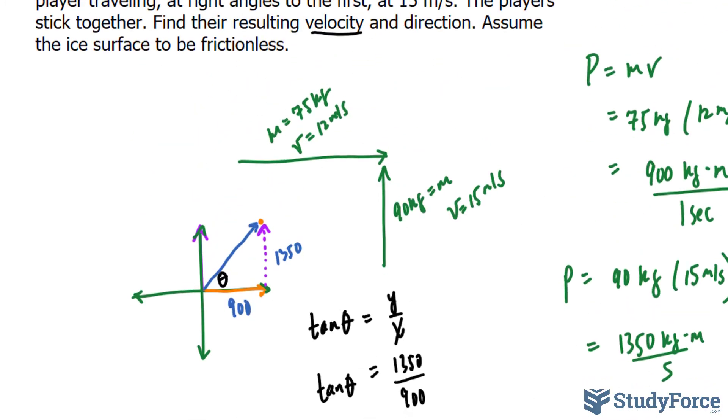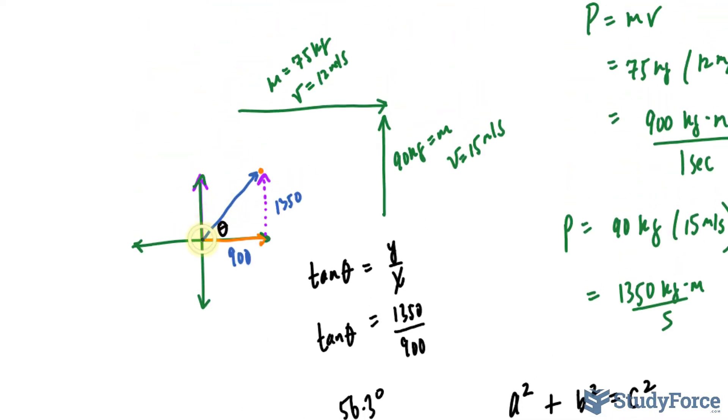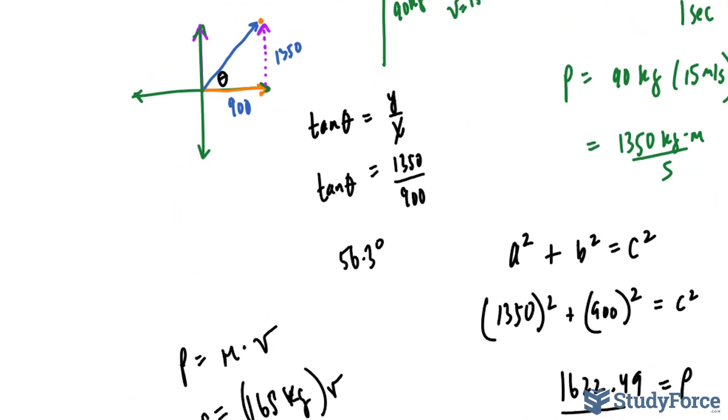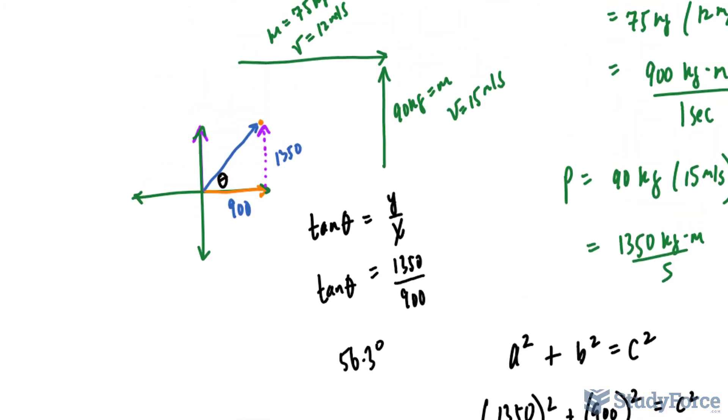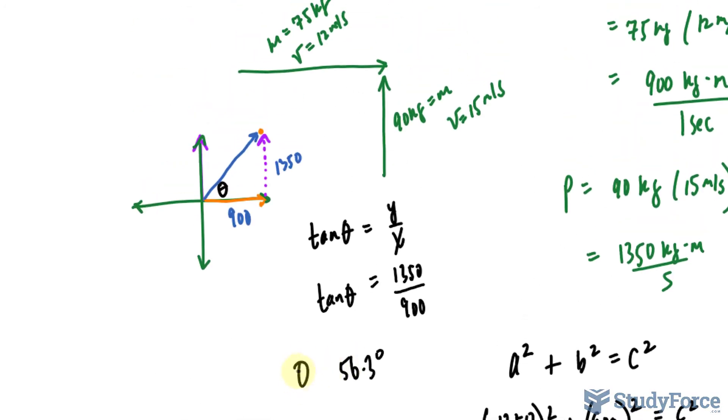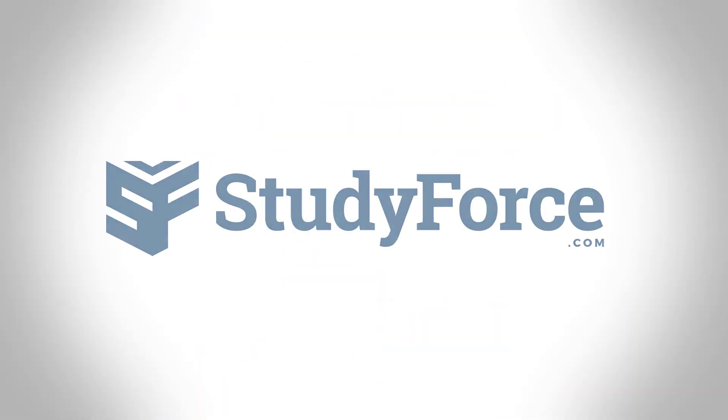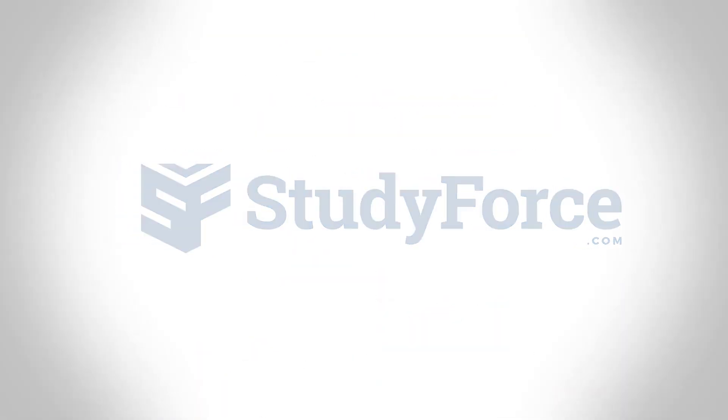So the speed is 9.83, the magnitude or the momentum is 1622 and the direction is 56.3 degrees. And there you have it. That is how to find the velocity and direction using the conservation of momentum. We'll see you next time.